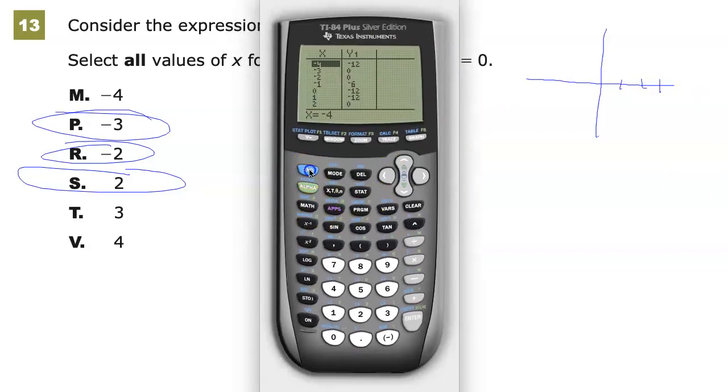Now, another way that you could find the specific numbers if you wanted is hit second calc, and you could find 0 values. Find a point that's left of one of them, and then find a point that's right of it, and then guess. And then you'd start to build them up that way. That's completely fine. That's a longer way to do it, I think, in this case. Sometimes I like to find the specific zeros or intercepts, and sometimes I just want to see what the zeros are in the table. That was easier for me.